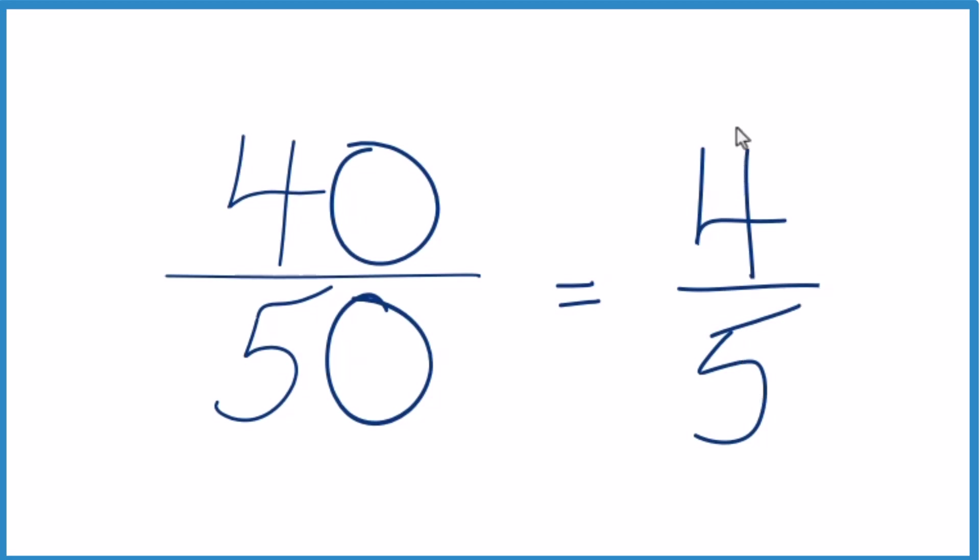We can't simplify this any further. If you divide 4 by 5, or 40 by 50, you get the same decimal answer, 0.8. That's because these are equivalent fractions. We've just simplified 40/50 down to 4/5.